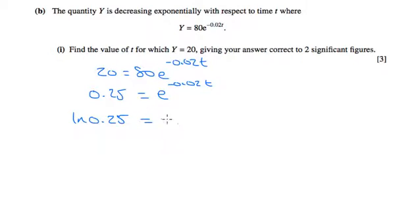Ln of 0.25 is going to equal negative 0.02t, and so t is going to equal the natural log of 0.25 divided by negative 0.02.